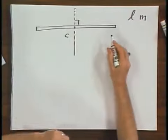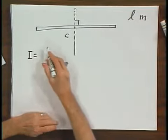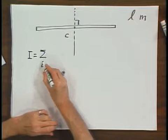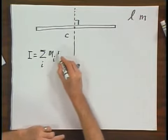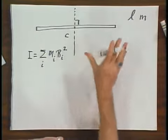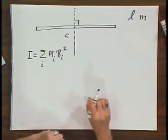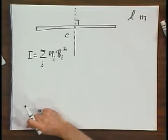Now we have continuous mass distribution. So the moment of inertia as we defined it, summed over all mass elements m_i times R_i squared, now obviously has to be changed into an integral. We have to integrate over this whole rod.